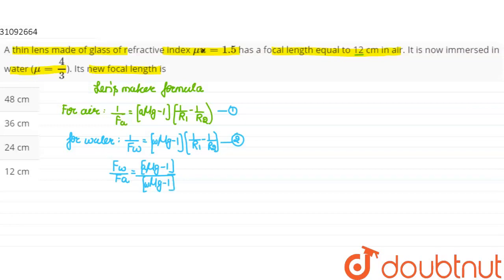We will simply add values. Mu of glass divided by mu of air minus 1, and the bottom will be mu of glass divided by mu of water minus 1. So we will put the values.